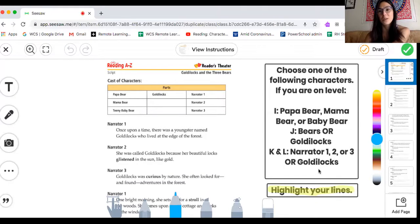After you've chosen which character you want to be, the next step is to highlight your lines. So Miss Sarah is going to show you how to do that. Click this highlighter button here at the bottom. It will automatically be yellow but you can choose orange or purple or blue as long as it's light enough for you to still read your name. And Miss Sarah is going to pretend that I'm on a level J and I want to read Goldilocks.